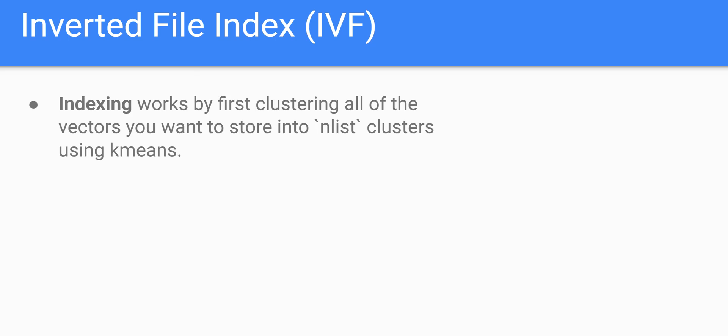In this video, we're going to learn another popular way of indexing a vector database, and that's Inverted File Index, also available in the FAISS library. The indexing portion of Inverted File Index works by first clustering all of the vectors you want to store in your vector database into nList clusters — that's a parameter — using k-means, the clustering algorithm.